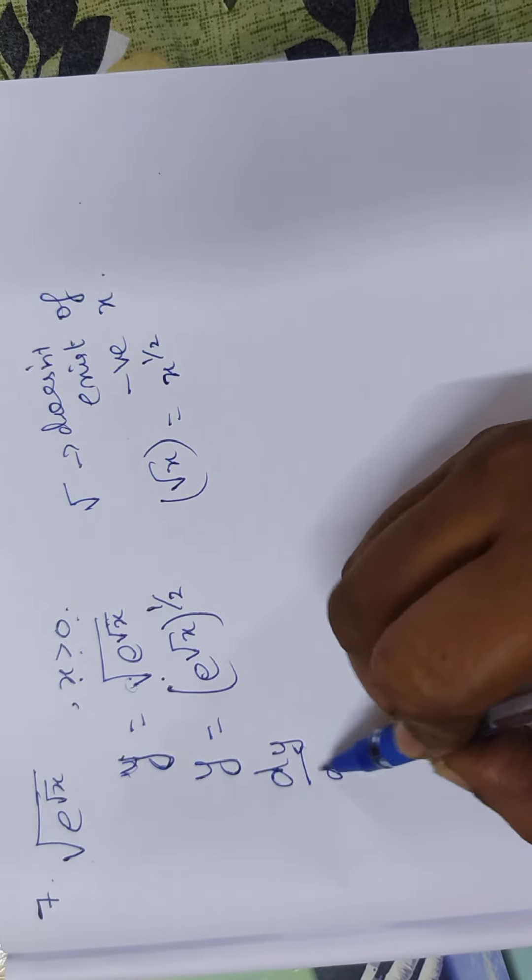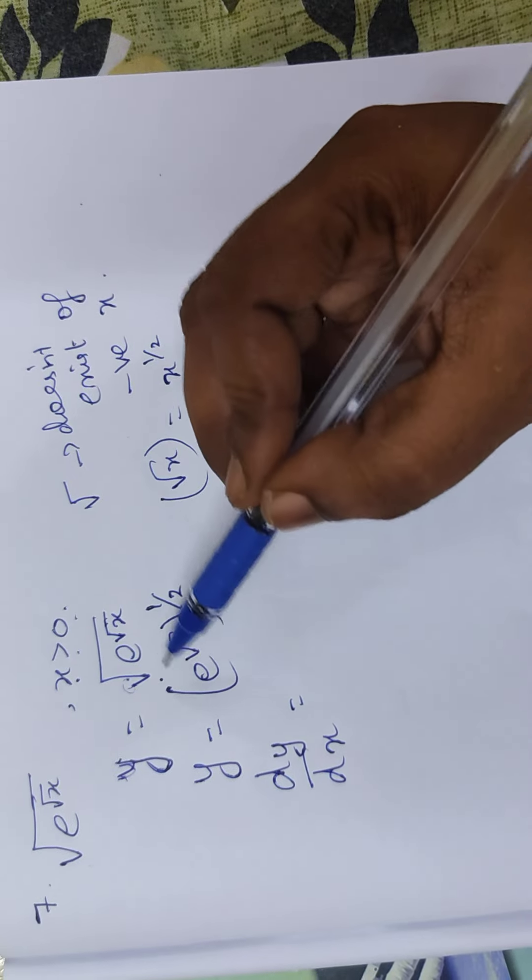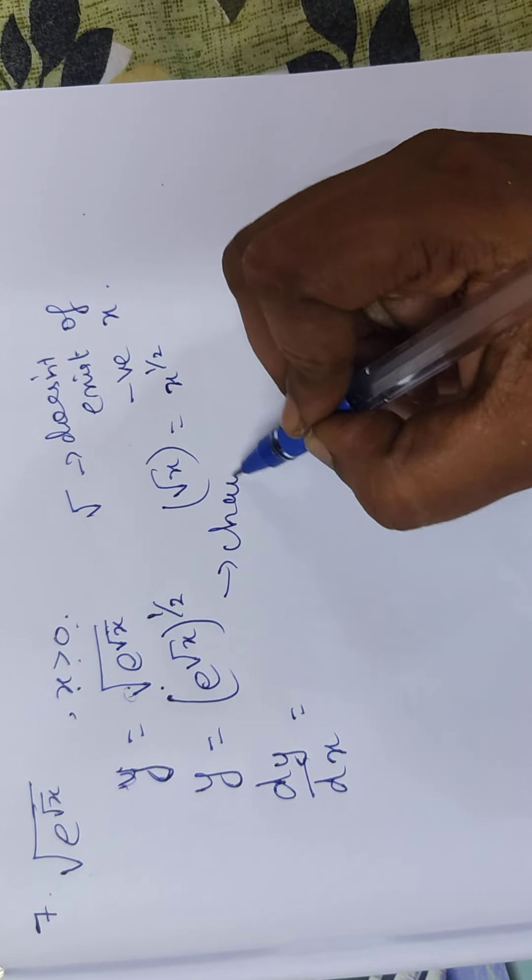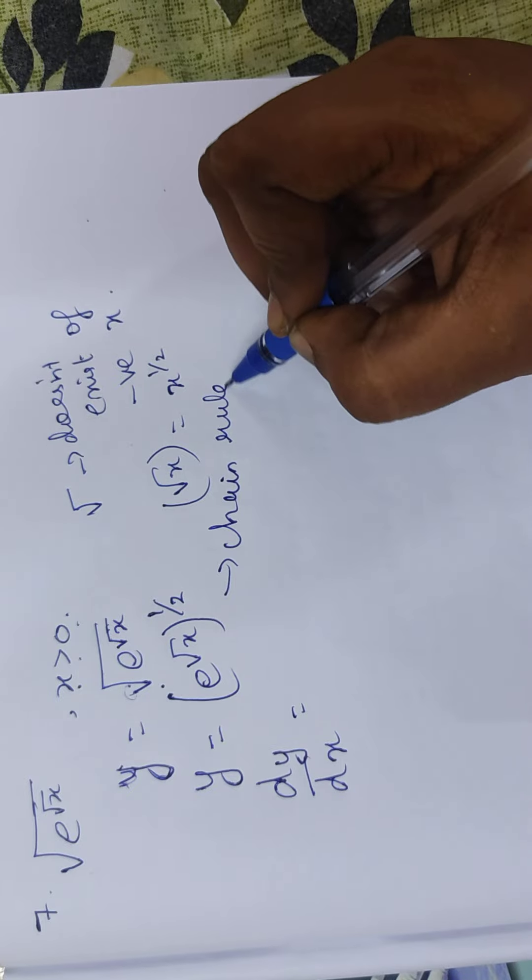Now dy by dx is equal to, at first, what do we do? We use chain rule. Chain rule use to differentiate.